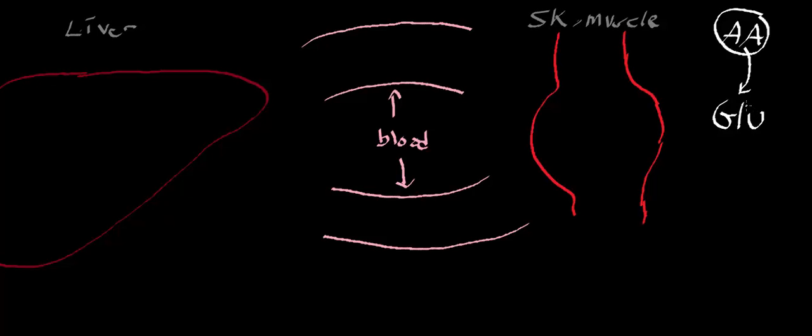Just like any amino acid, they have an alpha amine group, and that alpha amine group can get transported into the alpha amine of glutamate. That's important because glutamate is important in the reaction of transaminases. So now we're going to talk about the part of the glucose-alanine cycle that takes place in the skeletal muscle, starting with pyruvate.